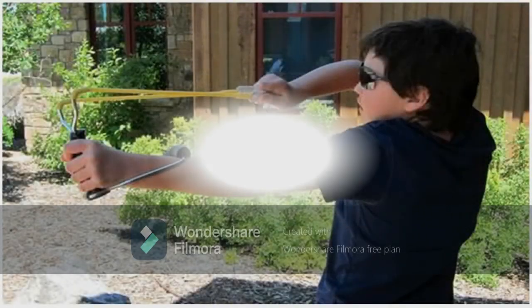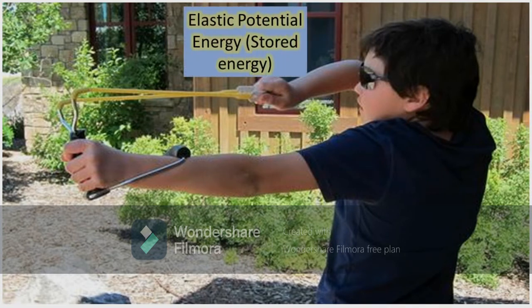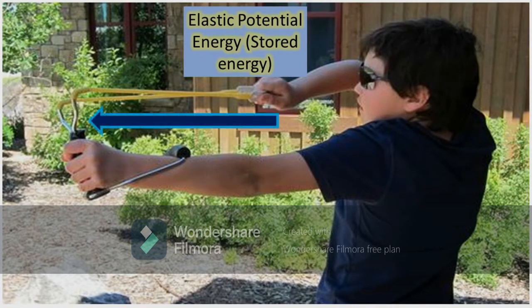Let's take a look at this illustration. Potential energy is always connected with kinetic energy. When this child stretches his slingshot, the elastic potential energy of the rubber increases. When he releases the slingshot, the stored energy or the potential energy will be converted into moving energy or kinetic energy.